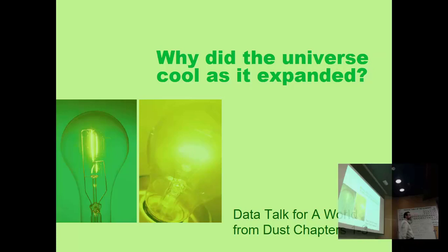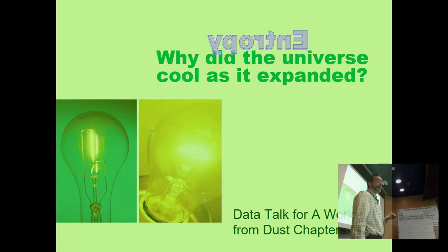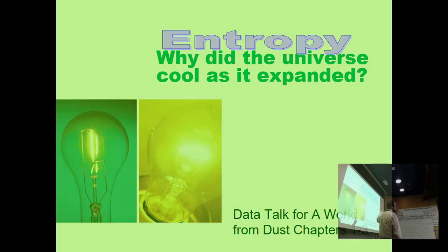I want you to see the original data and see how the topics connect between A World From Dust, Atkins, and the actual literature. We'll have three or four stories in this mode. We're ultimately going to get to the question of why did the universe cool as it expanded, which is a chapter one through three topic. The answer is entropy.